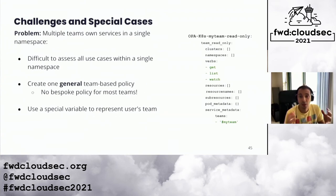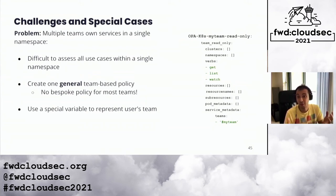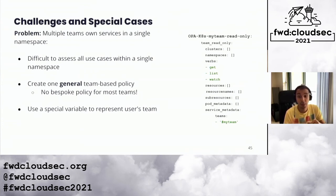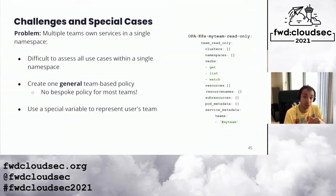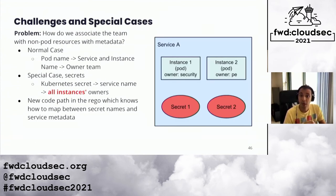The next problem we encountered during design was multiple teams owning services in a single namespace. In fact, one of our namespaces contained hundreds of services owned by more than a hundred teams. We could have created a capability for each team, but that would result in hundreds of different capabilities. Instead, we came up with a special keyword called `my_team` and created a single team-based policy. This couldn't be possible with default Kubernetes RBAC policies because RBAC policies do not provide such granularity.